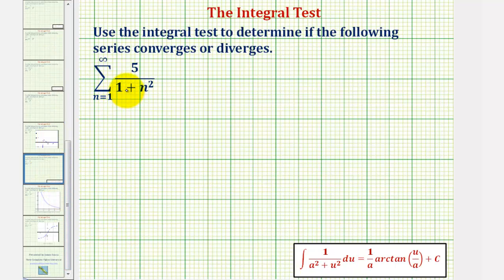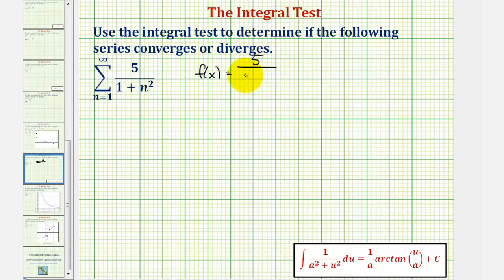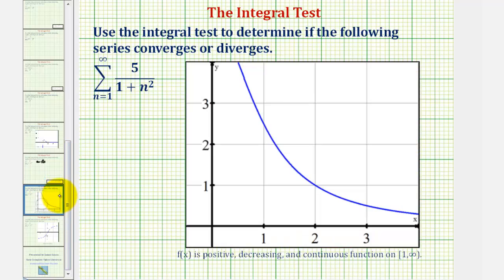Looking at the formula for a sub n, notice how we let f of x be equal to five divided by the quantity one plus x squared. This function is positive, decreasing, and continuous on the interval from one to infinity, which we can easily verify by looking at the graph, as we see here.